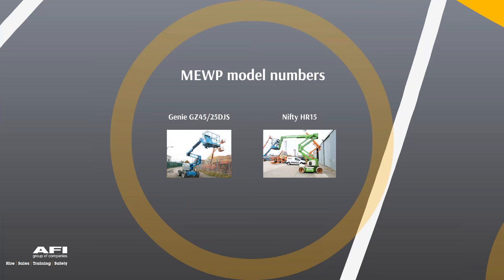To find platform height on a European machine, subtract two metres from the working height number — so an HR15 has a 13-metre platform height. Many European machines do not depict reach in their model numbers, unlike North American ones. It's important to check the spec sheet and confirm you have the right machine type. The MEWP managers course goes into depth on model numbers and helps people understand these important distinctions.